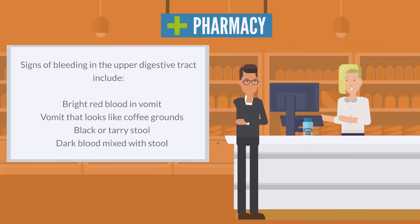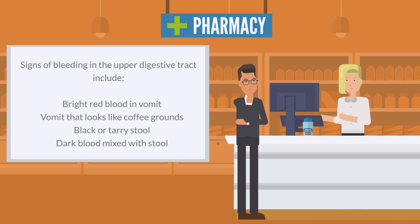Signs of bleeding in the upper digestive tract include: bright red blood in vomit, vomit that looks like coffee grounds, black or tarry stool, and dark blood mixed with stool.